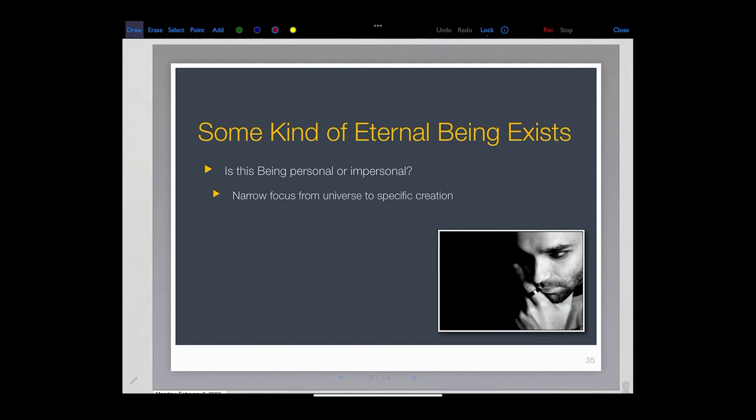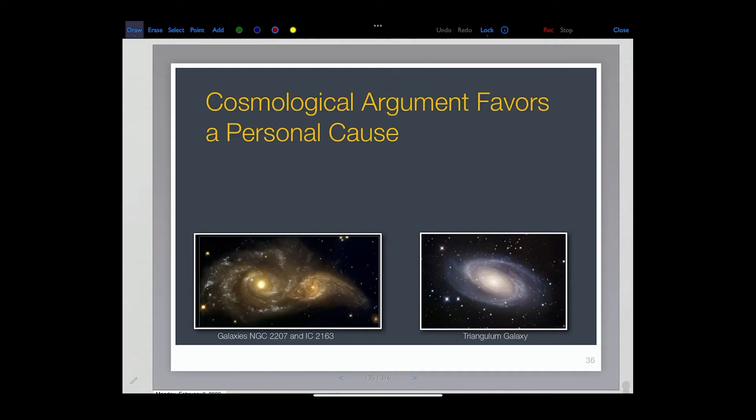And this is why we have this issue. Is this being personal or impersonal? Is this being then big enough then to have a narrow focus from the universe to a specific creation issue? And so the real question is we need to narrow it down to see specific aspects of the creation. What cause would be sufficient to explain the effects of order? So you have to have these ideas of cause and effect. The order and design in the universe. What cause would account for our personality? And what cause would account as well for moral consciousness?